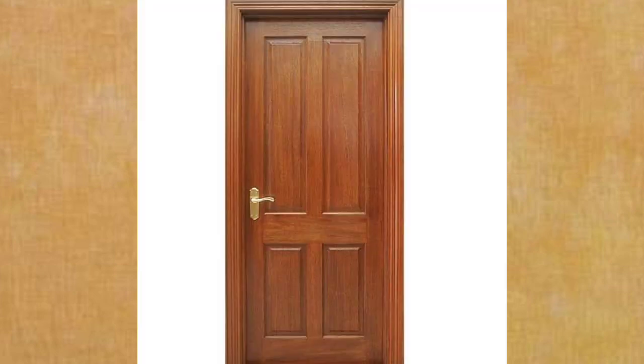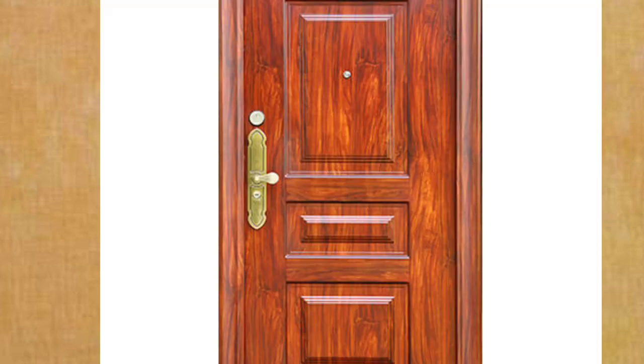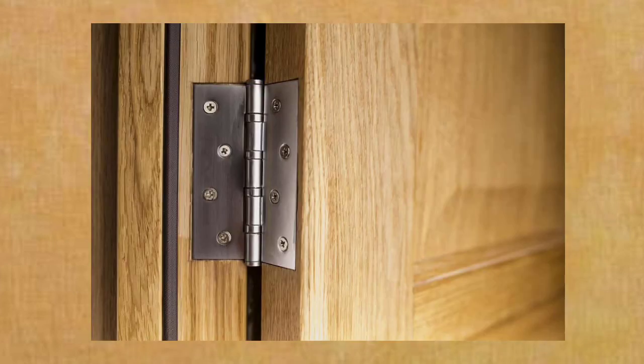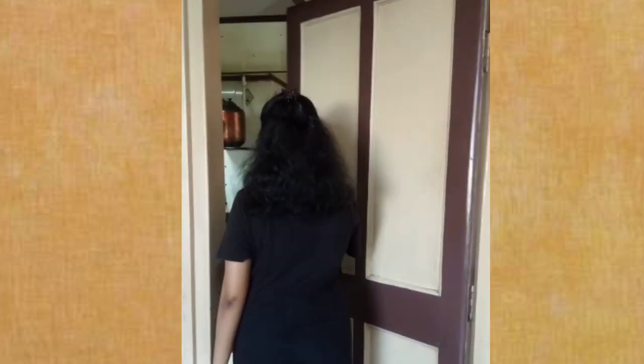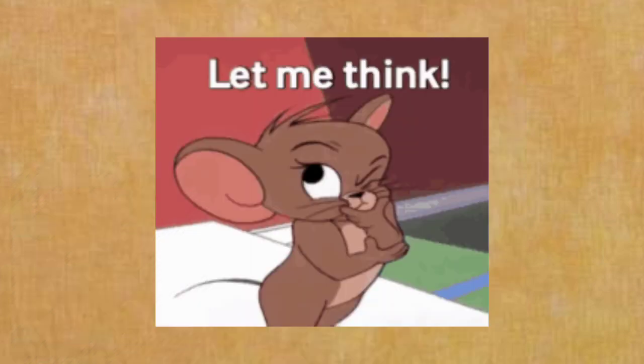Now, let's look at a door to understand torque better. To open a door, the first thing we look for is a handle. A handle is always located far away from the hinges of the door. The hinges of the door act as the axis of rotation. To open a door, we try to push near the handle of the door and never near the hinges of the door. Let's see the reason behind this.